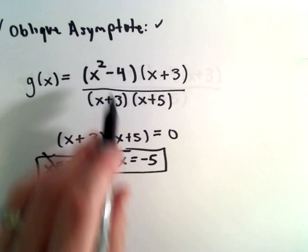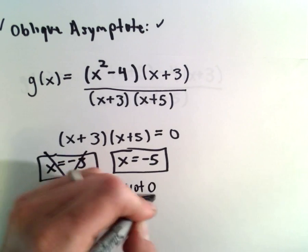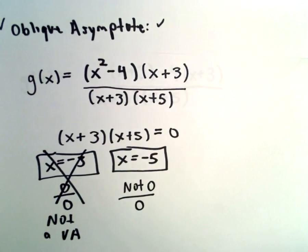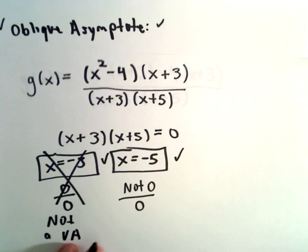That means x equals negative 3 is actually not a vertical asymptote. But if we put negative 5 into the numerator, we'll definitely get something not 0. We do get 0 in the denominator, so that means x equals negative 5 is, in fact, a vertical asymptote.